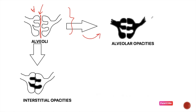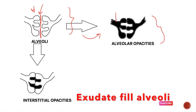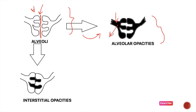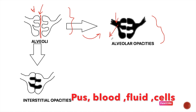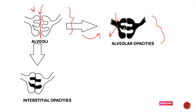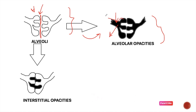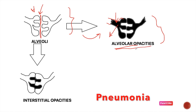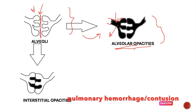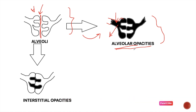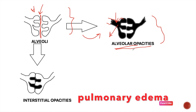The first type is known as alveolar opacities, which form when exudate fills up the alveoli. The content that may fill the alveoli may be pus, blood, fluid, or cells. As different alveolar sacs communicate with each other and connect to form terminal bronchi, the content in the alveoli may also coalesce. These opacities are seen in pneumonia when pus fills the alveoli, pulmonary hemorrhage and lung contusions when blood fills the alveoli, and pulmonary edema when fluid fills the alveoli.